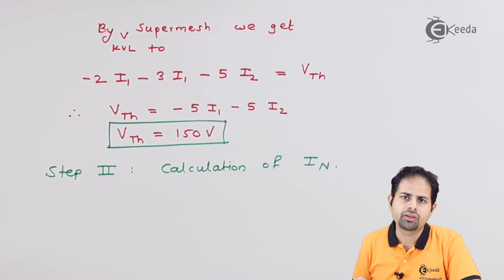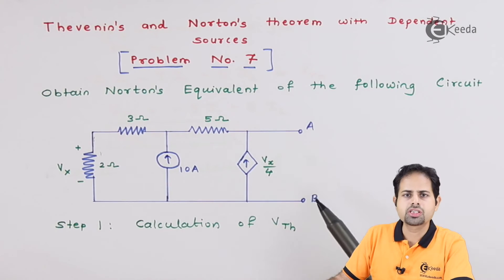Now to calculate Norton's current, we have to short branch AB. So we will short this branch AB now.